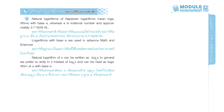Page 147. Natural logarithms, or Neperian logarithms, mean logarithms with base e, where e is an irrational number approximately equal to 2.7182818... Logarithms with base e are used in advanced math and sciences. The natural logarithm of x can be written as log x base e. In general, we prefer to write ln x instead of log x base e, and it is read as logarithm of x with base e.